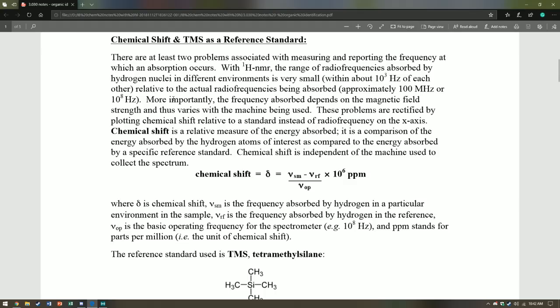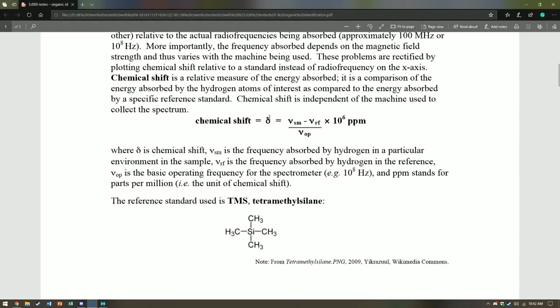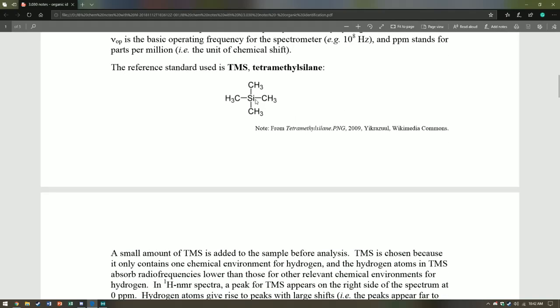The way we do that is we plot chemical shift relative to a standard, instead of radio frequency, on the x-axis. Here's the formula for shift: delta equals sample minus the reference over the operating frequency, times 10 to the 6. And the reference chemical we use is tetramethylsilane, or TMS.